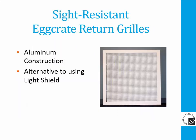This egg crate return grill has a 45 degree deflection face to limit the sight into the plenum. It is designed for plenum return applications where an open egg crate grill requires an optional light shield to block the view into the ceiling cavity or light shining through skylights into the space. The angled blades will limit that exposure.